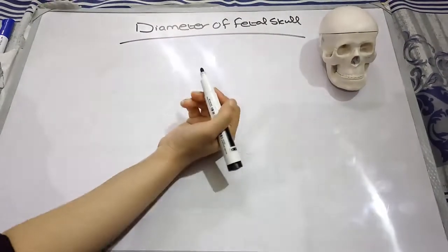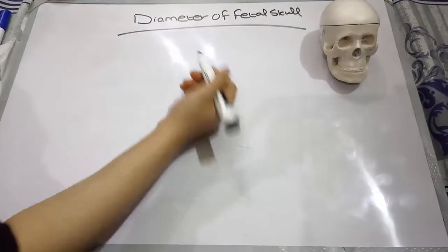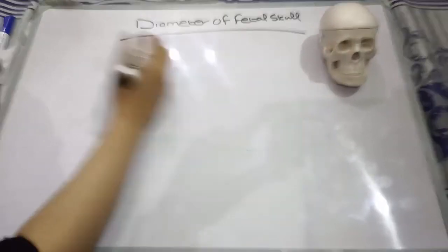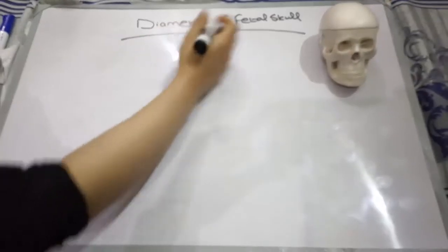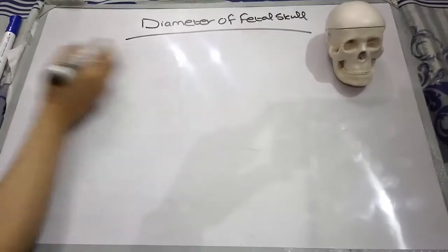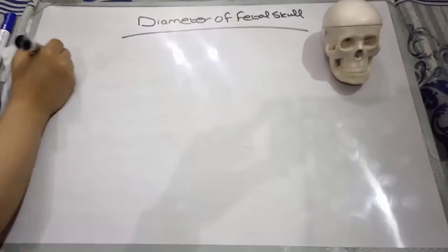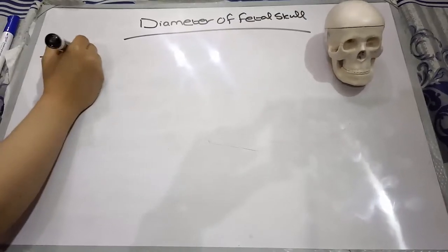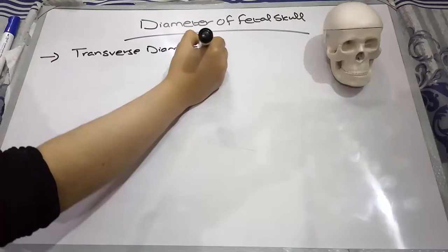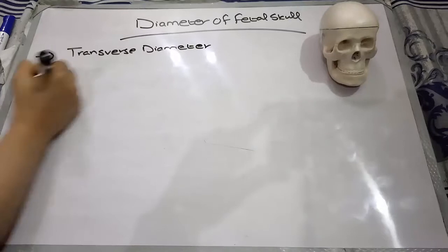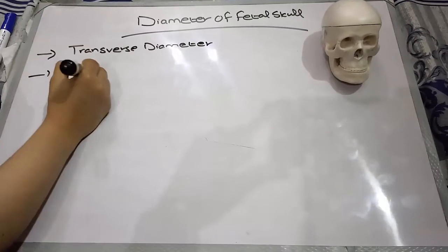In this video we will be discussing about the diameters of the fetal skull. Basically, in the fetal skull we have two types of diameter: transverse diameter and longitudinal diameter.